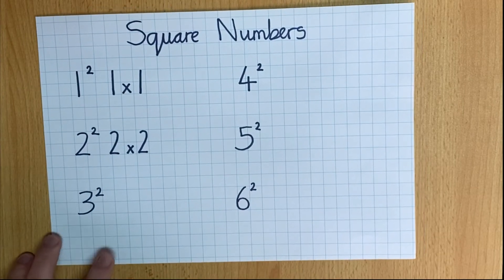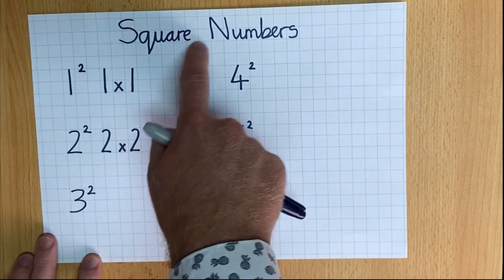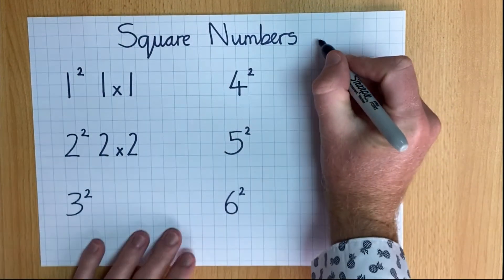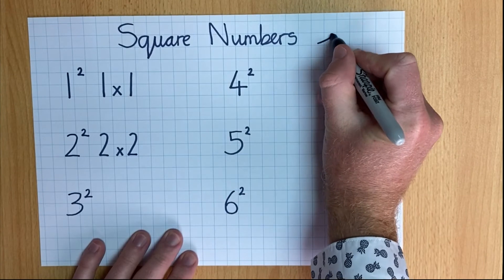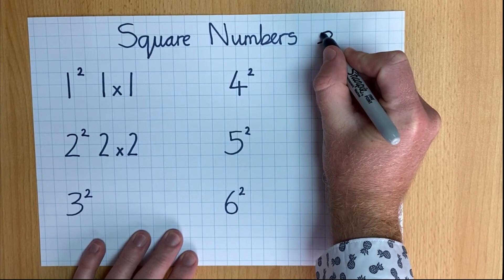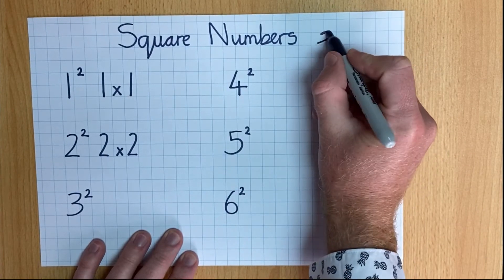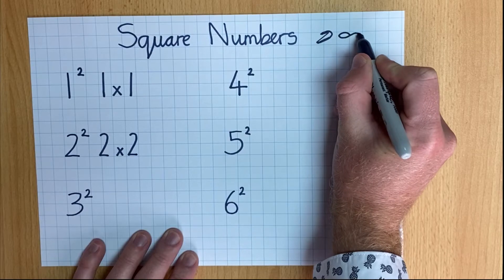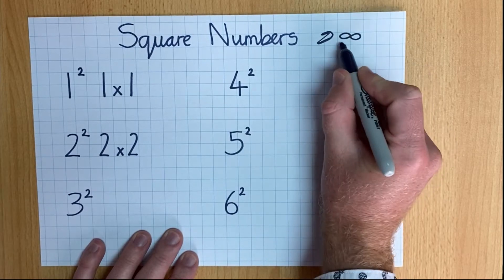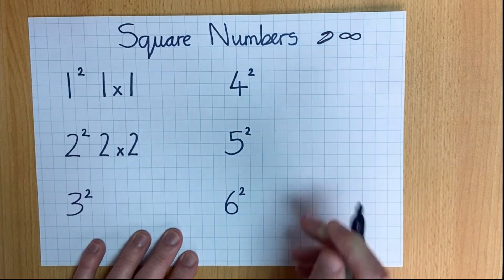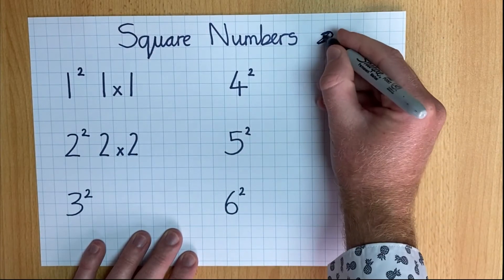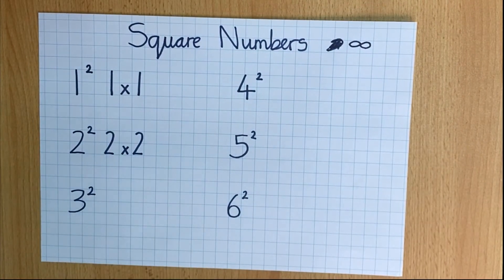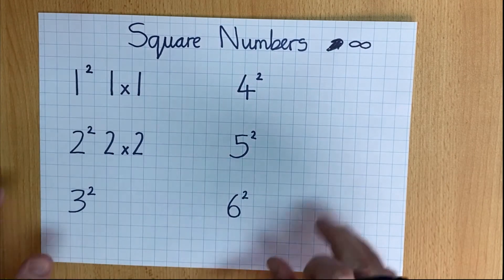Now, the first thing to know about squared numbers is that there are infinite amounts of squared numbers. This is the sign for infinity, so it means that they go on forever.